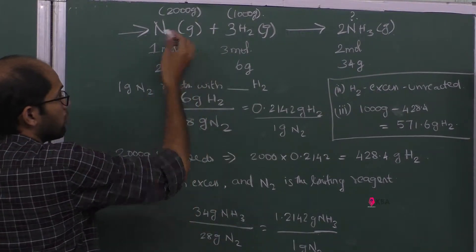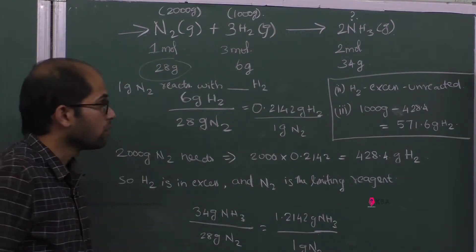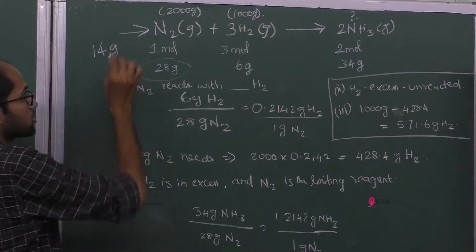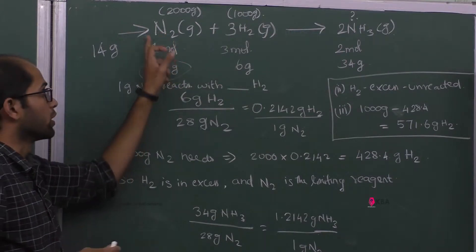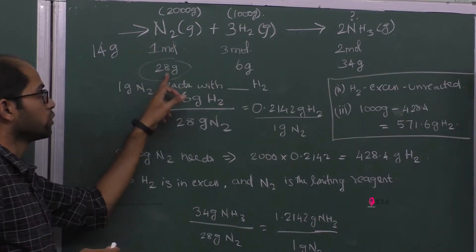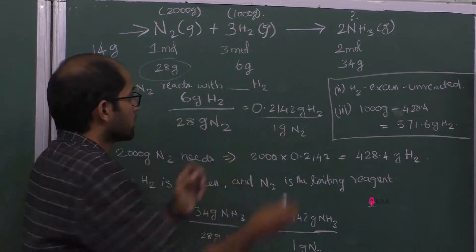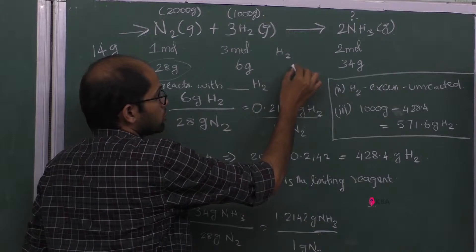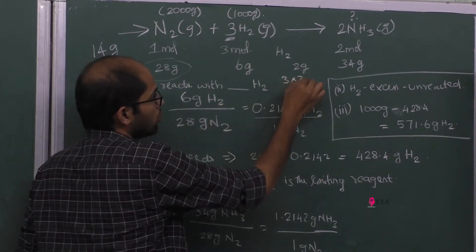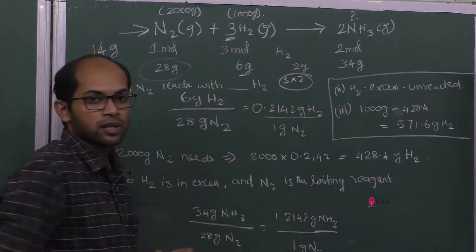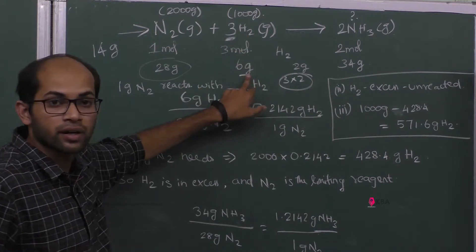1 mole of nitrogen molecule — what is the molecular mass? The atomic mass of nitrogen is 14 grams, so N2 is 14 × 2 = 28 grams. The atomic mass of hydrogen is 1 gram, so H2 is 2 grams. 3 moles of H2 is 3 × 2 = 6 grams.